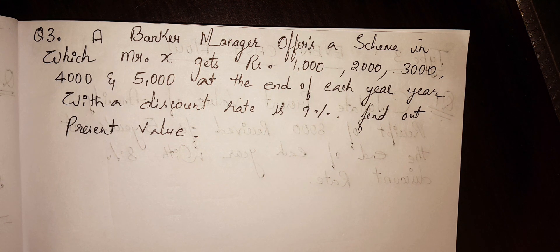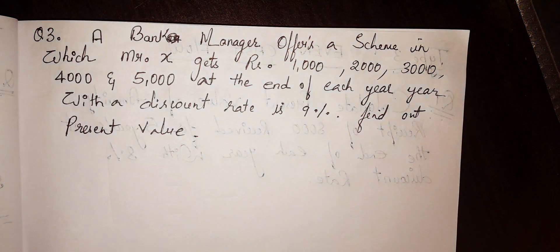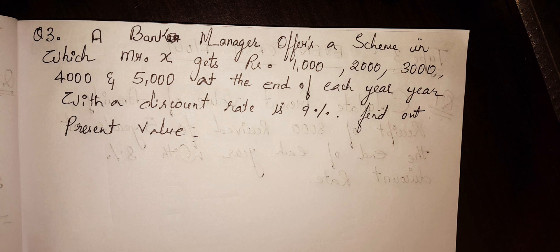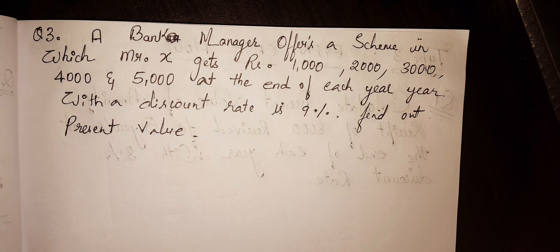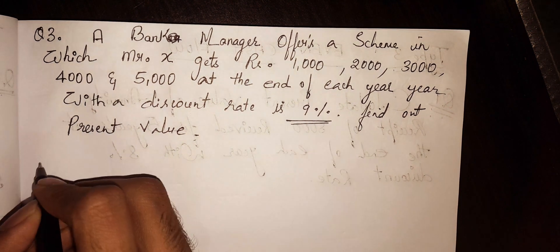The question is on the screen. A bank manager offers a scheme in which Mr. X gets 1000, 2000, 3000, 4000 and 5000 at the end of each year. With a discount rate of 9%, we have to find out the present value.